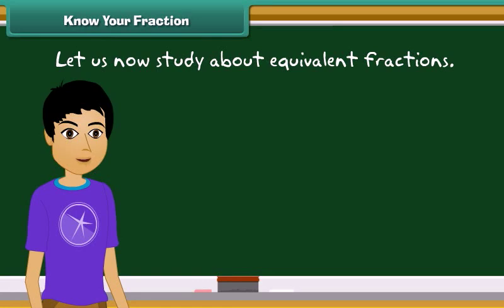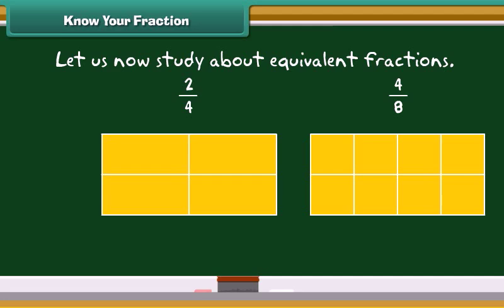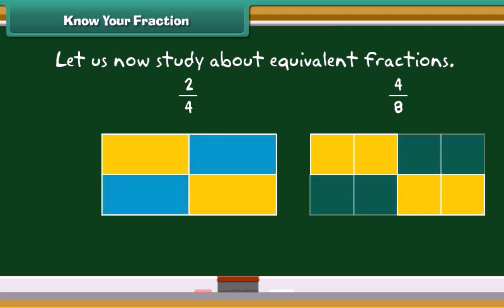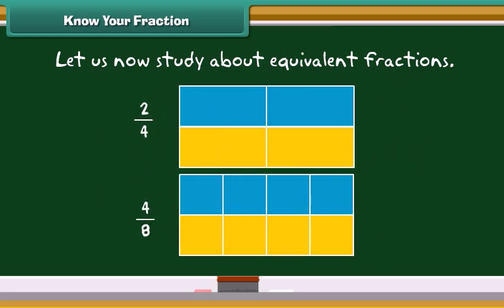Let us now study about equivalent fractions. Look at the rectangular boxes given below. In the first figure, two by four boxes are blue, while in the second figure, four by eight boxes are blue. Observe carefully. The blue colored parts of both the boxes are same. This means two by four must be same as four by eight. So, two by four and four by eight are equivalent fractions.